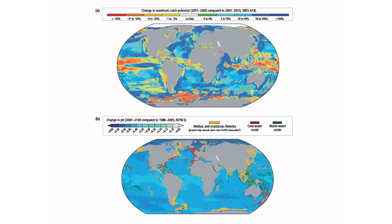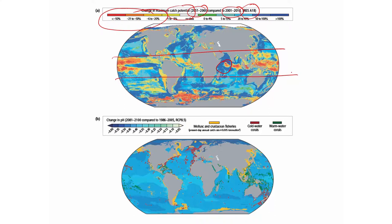This map shows projections of changes in maximum catch potential — how many tons of fish are available in any given region. Temperature change, acidification, and related effects change predator-prey dynamics, body size, and mortality, resulting in a change in the maximum available yield. The map compares the 2001–2010 period to 2051–2060, and you can see large tropical regions with huge negative changes in projected potential fishing yields.